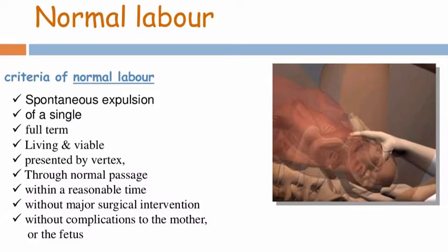Criteria for normal labor: it must be spontaneous — not induced. It must be a single pregnancy. The child must be at full term, that's 37 to 42 weeks. Must be alive and viable, must present with vertex presentation in the occiput anterior position. Delivery should occur through the normal passage within a reasonable time, without major surgical interventions and without complications to the mother or fetus.